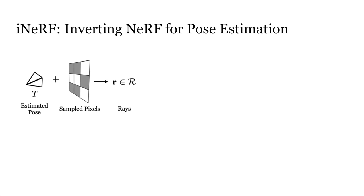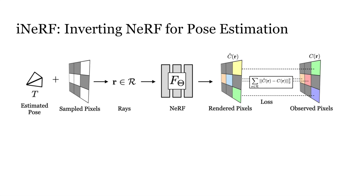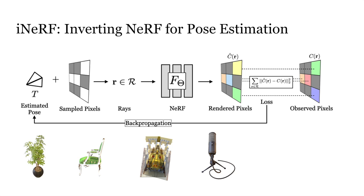Following a similar rendering procedure to compute the loss with the observed image, iNeRF instead propagates the gradients to the estimated pose. After it is completed, iNeRF is able to recover the correct camera poses by aligning the rendered and observed images. Here, we show four examples to illustrate the process.